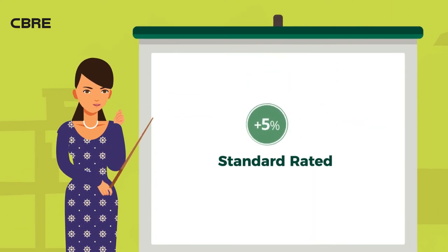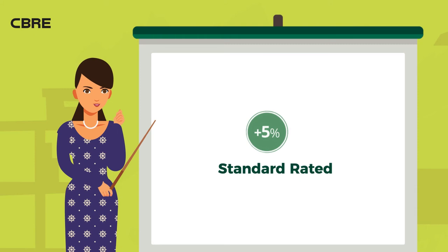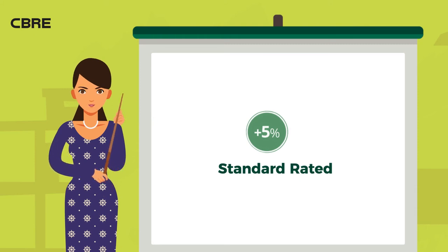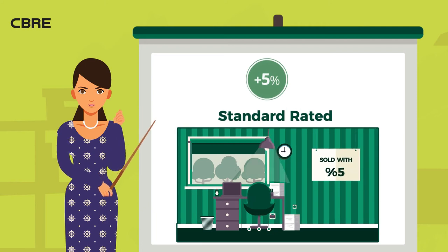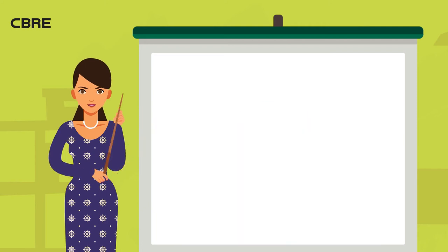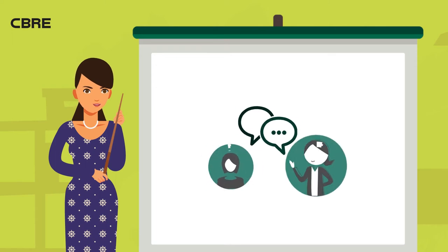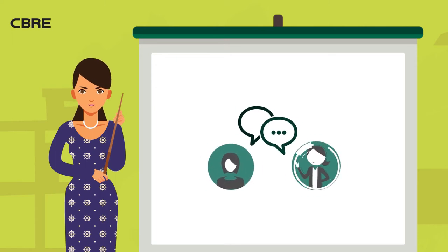Standard rated VAT means a good is subject to VAT at a rate of 5%. An example of this would be an office lease or sale. In this last example, I'm going to show you a discussion between a client and her advisor on how VAT may affect her as a property developer.